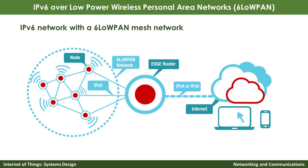This figure illustrates how the 6LoWPAN mesh network works by interoperating with the IPv6 network. Basically, it has a 6LoWPAN mesh network connected to an edge router, and then the edge router connects to the Internet. A key difference is that the edge router translates the communication by having a permanent energy source connected to it, so it can handle much more internet connectivity processing than the resource-constrained nodes.